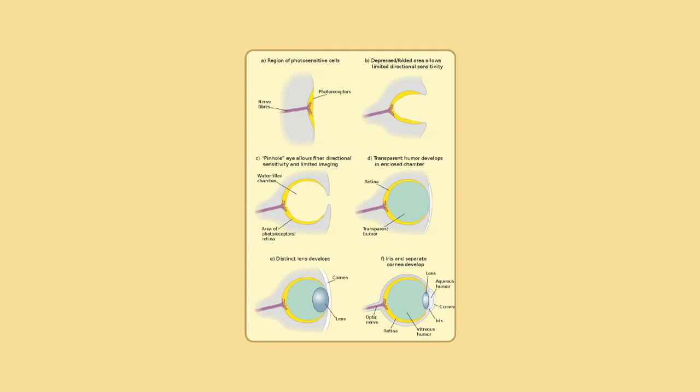The vestibulo-ocular reflex is a reflex eye movement that stabilizes images on the retina during head movement by producing an eye movement in the direction opposite to head movement in response to neural input from the vestibular system of the inner ear, thus maintaining the image in the center of the visual field. For example, when the head moves to the right, the eyes move to the left. This applies for head movements up and down, left and right, and tilt to the right and left, all of which give input to the ocular muscles to maintain visual stability.